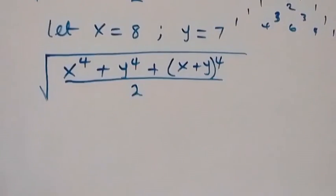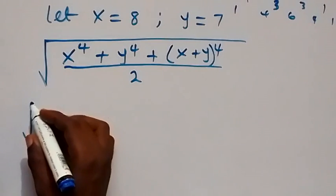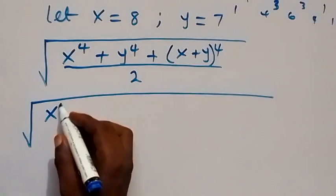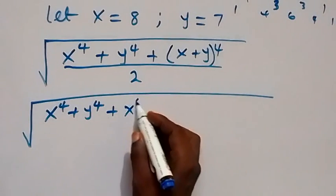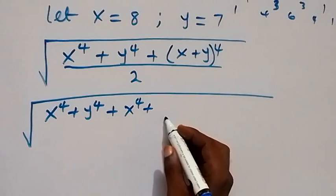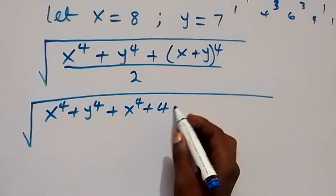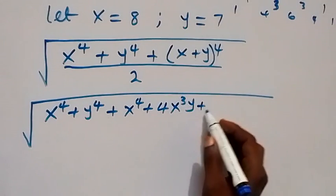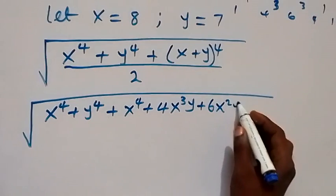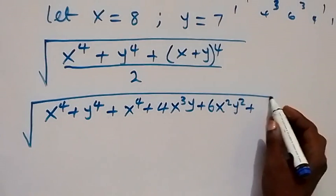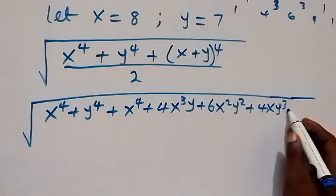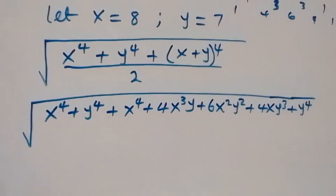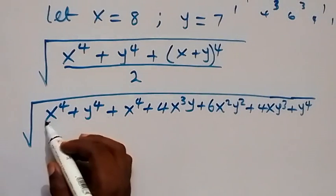Applying the expansion, we get: square root of x⁴ plus y⁴ plus the expansion of (x+y)⁴, which gives x⁴ + 4x³y + 6x²y² + 4xy³ + y⁴, all divided by 2.